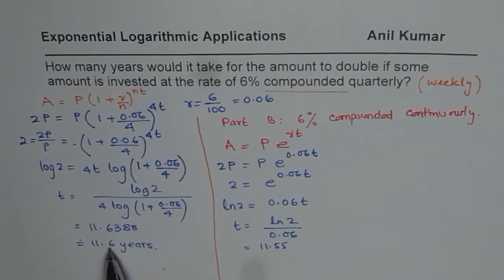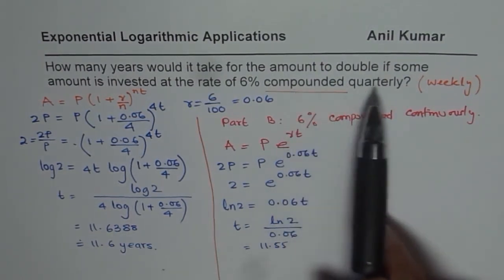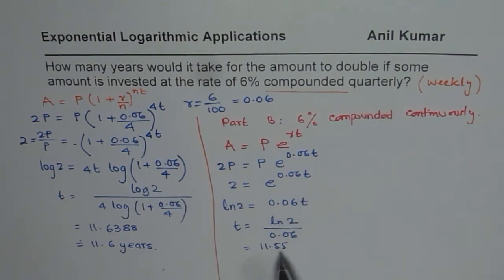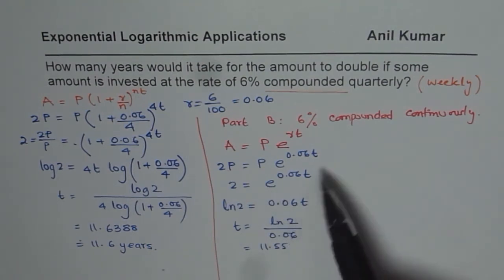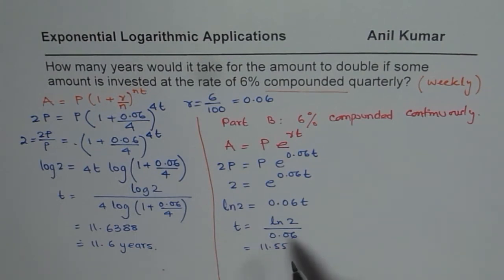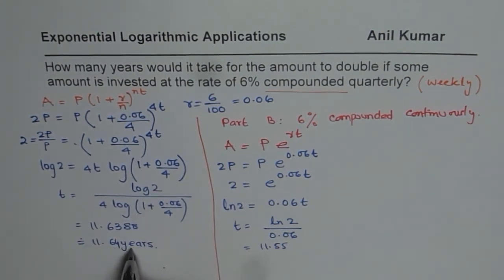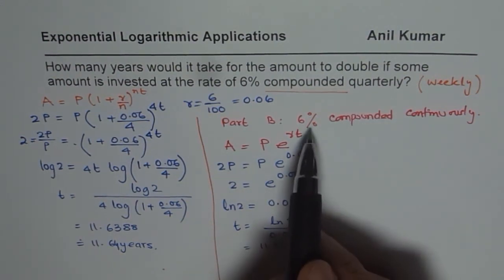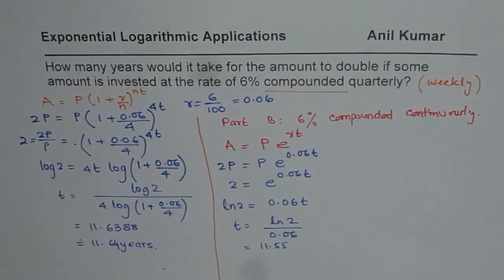So we get 11.55 — slightly less than the quarterly case. If instead of quarterly compounding we do it continuously, we save some time in doubling. It is a much faster growth rate when compounding continuously. Comparing to two decimal places: 11.64 in the quarterly case and 11.55 in the continuous case for the same interest rate. So the compounding period really affects the growth factor. In this video, we have seen how you could use log to the base e or log to the base 10 to solve such questions. Thank you and all the best.